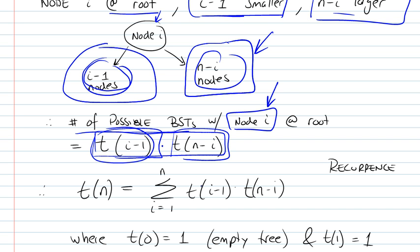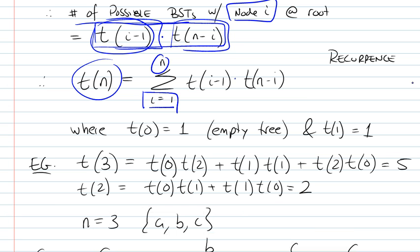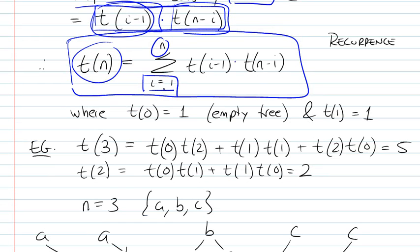Do the same thing, but now not only for node i, but for i going from 1 to n. So for all of our elements, then you get the summation, and this would be your recurrence relationship. This would give you the possible number of BST configurations for a given set of elements placed in their proper order from 1 to n.